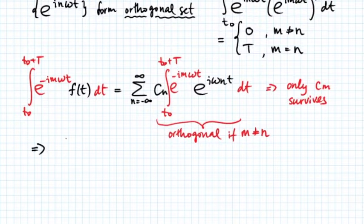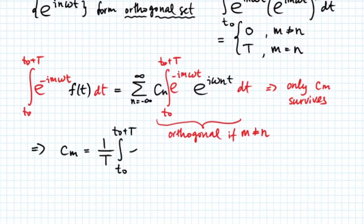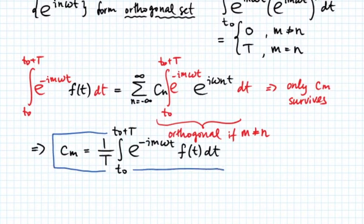Therefore, we will have that C sub m is given as 1 over period T, integral from arbitrary t0 to t0 plus period T, e raised to power of minus i m omega t, omega the fundamental frequency, f of t times dt. This gives us the expression for the coefficient in the Fourier series.